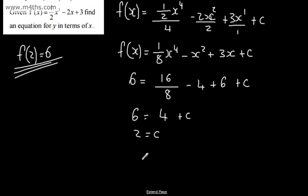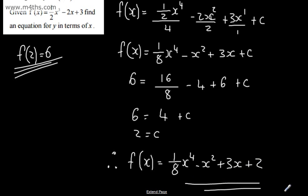Therefore, all we need to do is put this back together, as we've seen in previous examples in the videos before this. And we can say now f of x is equal to 1 eighth x to the fourth, we're going to have minus x squared, we're going to have plus the 3x, and we're going to have plus c, which is 2. So that now is our expression for f of x.